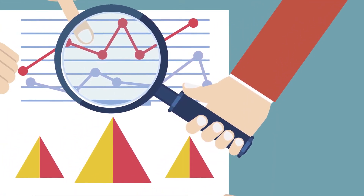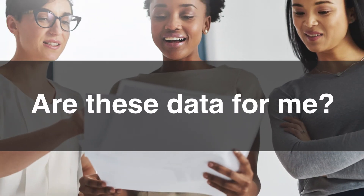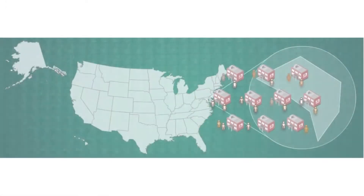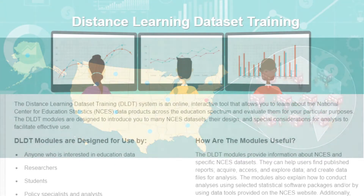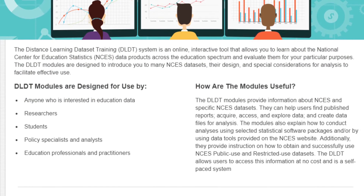This training system has been designed to provide maximum flexibility in answering questions you may have about the NCES datasets described within it, beginning with the fundamental question: are these data for me? The DLDT allows you to access the information you need at your own pace. It provides instruction in how to properly use NCES public use and restricted use datasets. All of this training and information can be found on the NCES DLDT website.